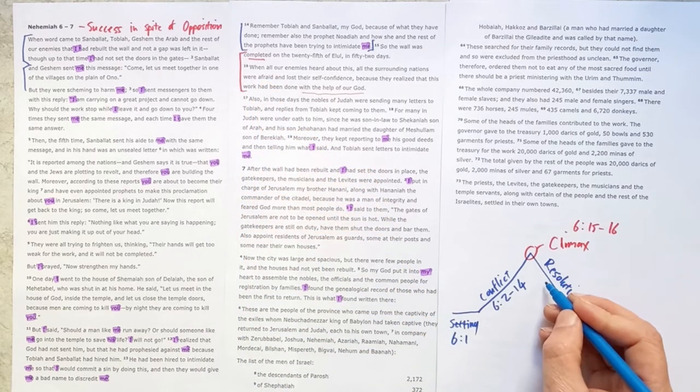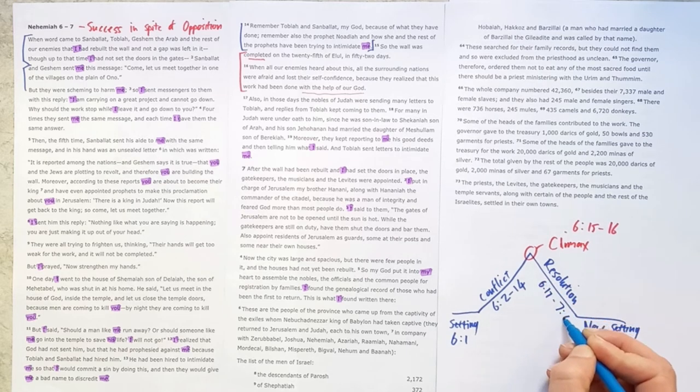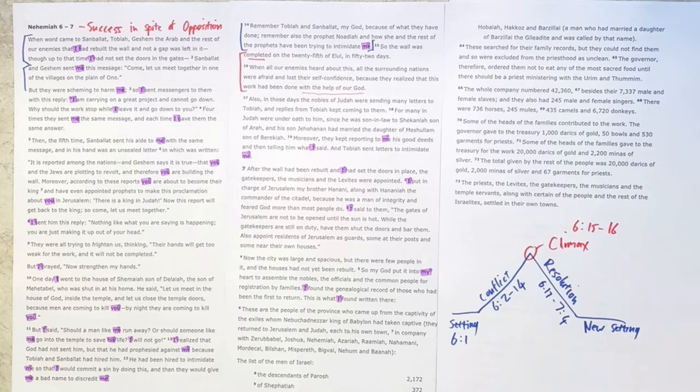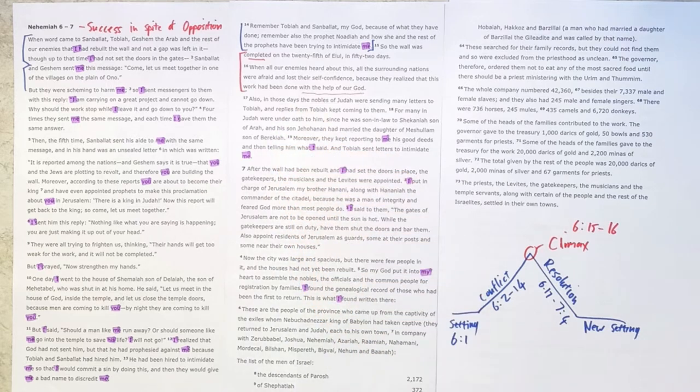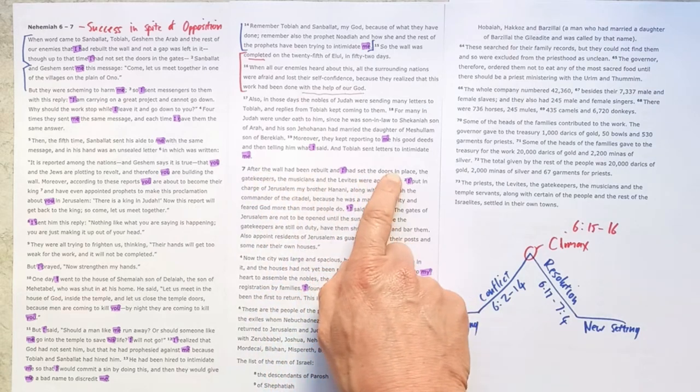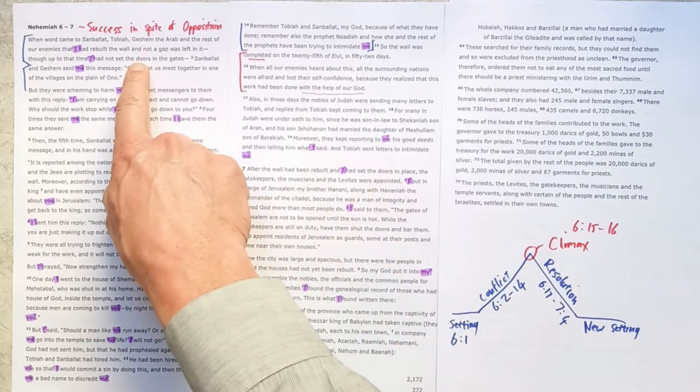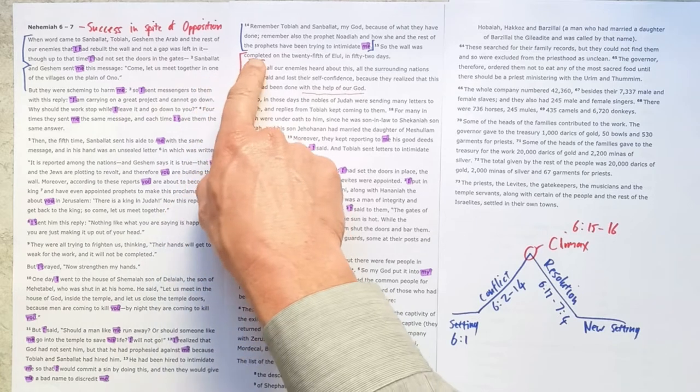The resolution comes in 6 verse 17 through to 7 verse 4, where the same tactics continue. We see Nehemiah under attack still in this section. But Nehemiah continues to lead by putting measures in place to protect the now-completed city, because we see after the wall had been rebuilt and the doors are put in place. So now what they were waiting for in verse 1 is now complete. So the whole work is completed.